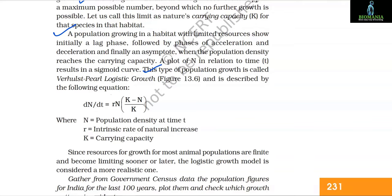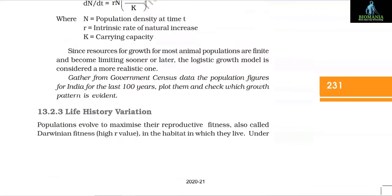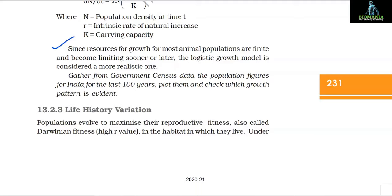This type of population growth is called Verhulst-Pearl logistic growth and is described by: dN/dt = rN × (K − N)/K, where N is the population density at time t, r is the intrinsic rate of natural increase, and K is the carrying capacity. Since resources for growth are finite and become limited sooner or later, the logistic growth model is considered a more realistic one. The population figures for India for the last 100 years can be plotted from government census data to check which growth pattern is evident.